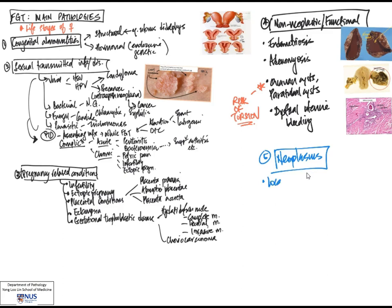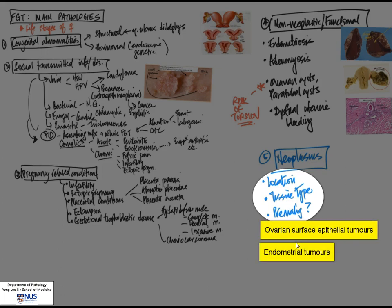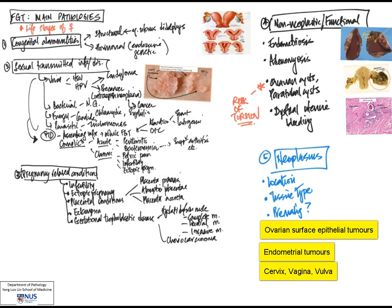The last big category of main pathologies is neoplasms, which will be separately dealt with in a different mind map. A few key pointers: it is important to look at them in three respects — the location (which part of the female genital tract, external or internal), the tissue type (knowing your histology is very important), and whether they have pre-malignant conditions that can develop into invasive cancer. Locations with pre-malignant conditions include the ovarian surface epithelial tumors, the endometrium in terms of endometrial adenocarcinoma, and also the cervix, vulva, and vagina, where there are pre-malignant states for squamous neoplasms.